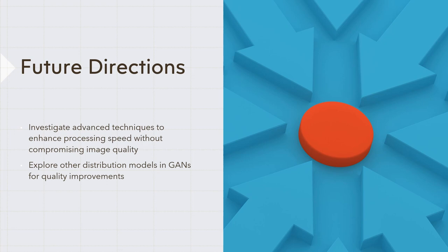Moving forward, I would like to investigate more in order to advance and create techniques to improve the quality of the image generated while also keeping this groundbreaking speed. One of my initial approaches would be to explore other distribution models in GANs for quality improvements, not just uniform distribution.